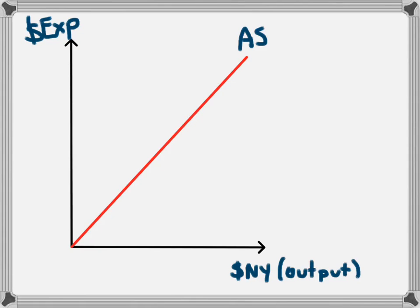This video is going to look at the aggregate demand curve and how it leads to an equilibrium level of national income. If you haven't seen the video on aggregate supply, you should watch that first.